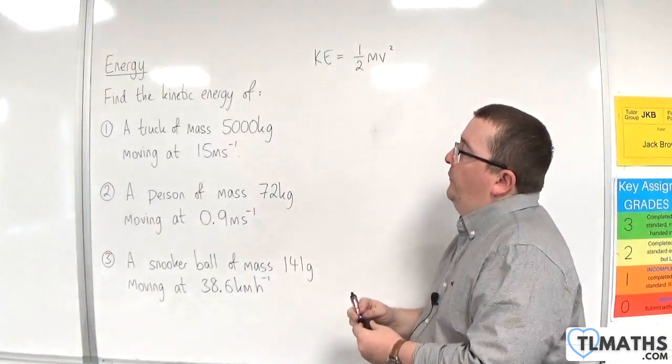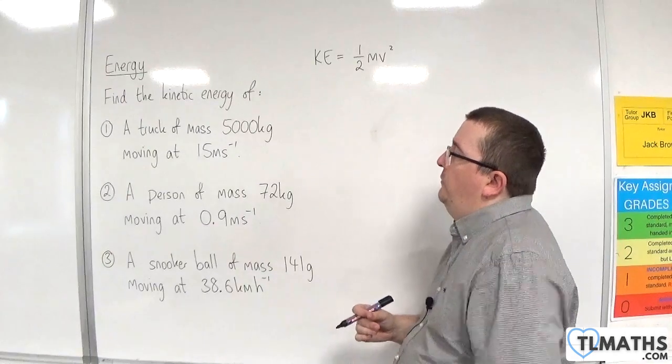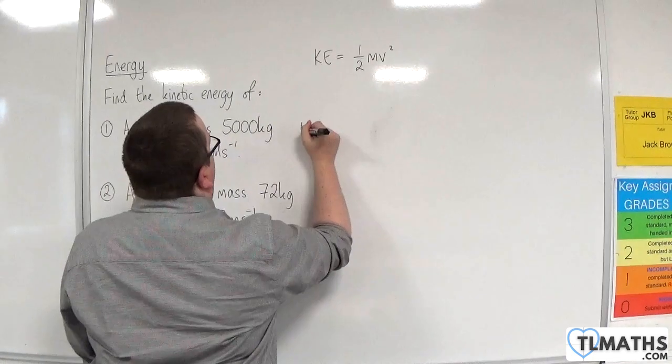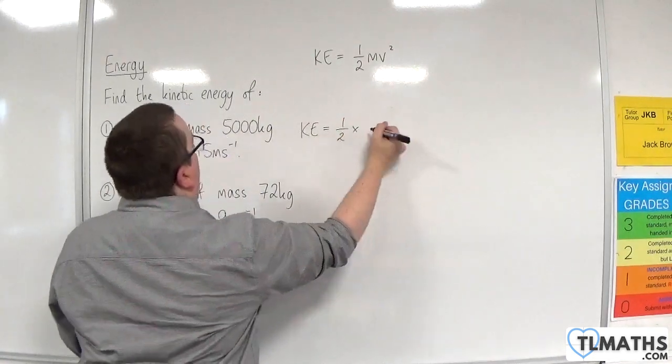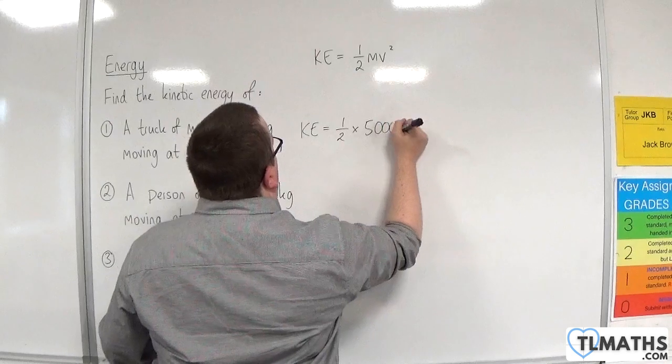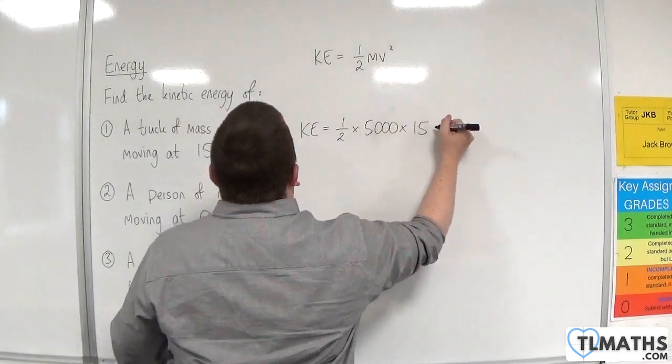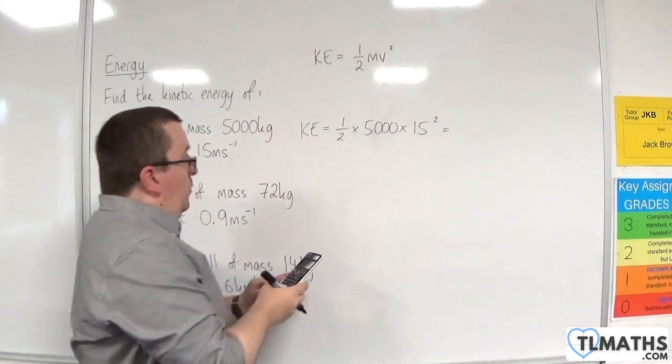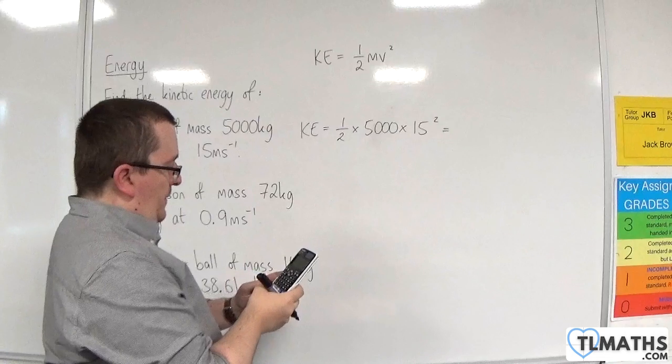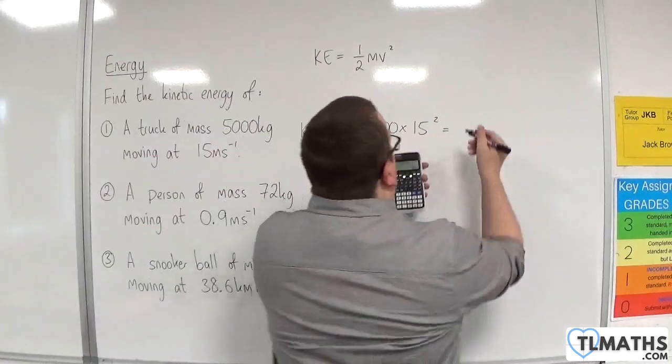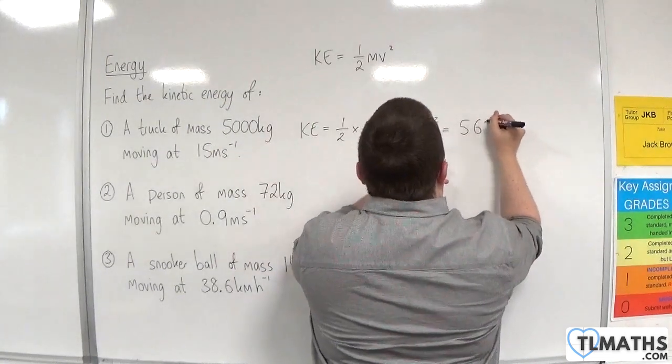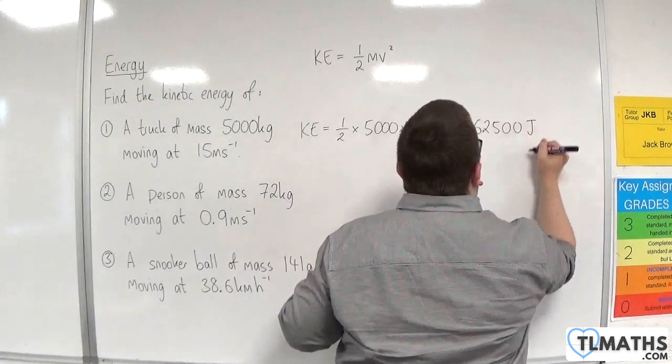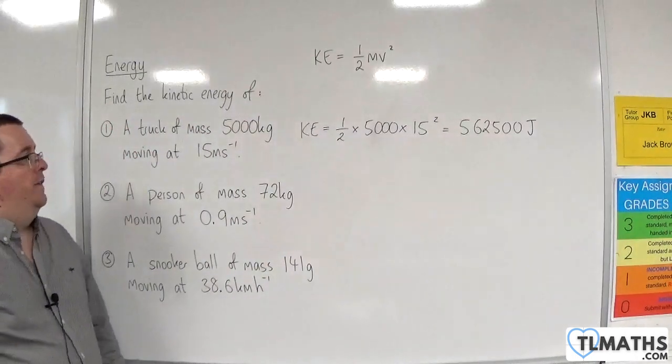For number one, we've got a truck of mass 5,000 kilos moving at 15 metres per second. The units are fine, so the kinetic energy will be equal to one-half times 5,000 times 15 squared. One-half times 5,000 times 15 squared is 562,500 joules. Make sure you write the units at the end.